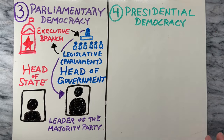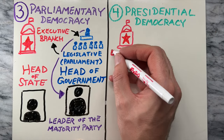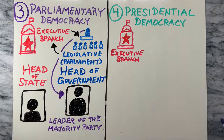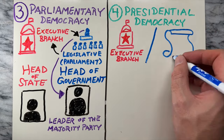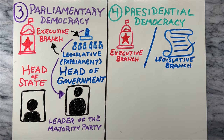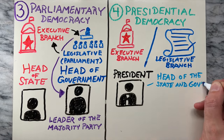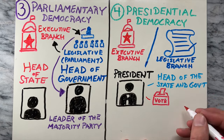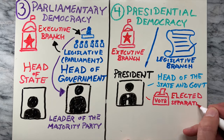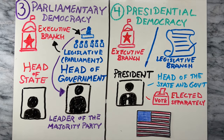Fourth is presidential democracy. In a presidential democracy, the executive branch is separate from the legislative branch. The president is the head of state and government, elected separately from the legislature. The United States is a notable example of a presidential democracy.